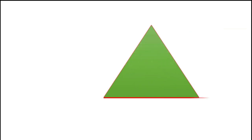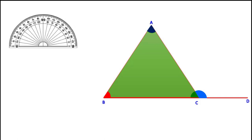One more property is that when any side of a triangle is produced, the exterior angle so formed forms a linear pair with the adjacent interior angle. That is, angle ACB plus angle ACD is equal to 180 degrees.